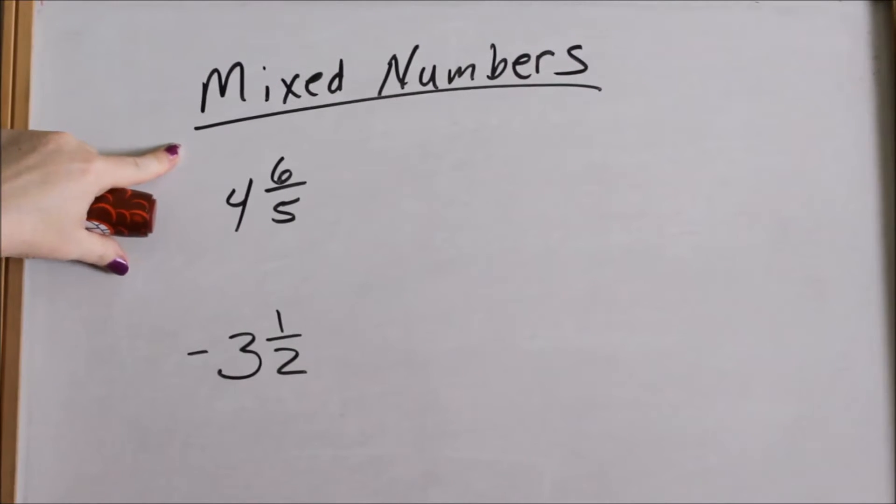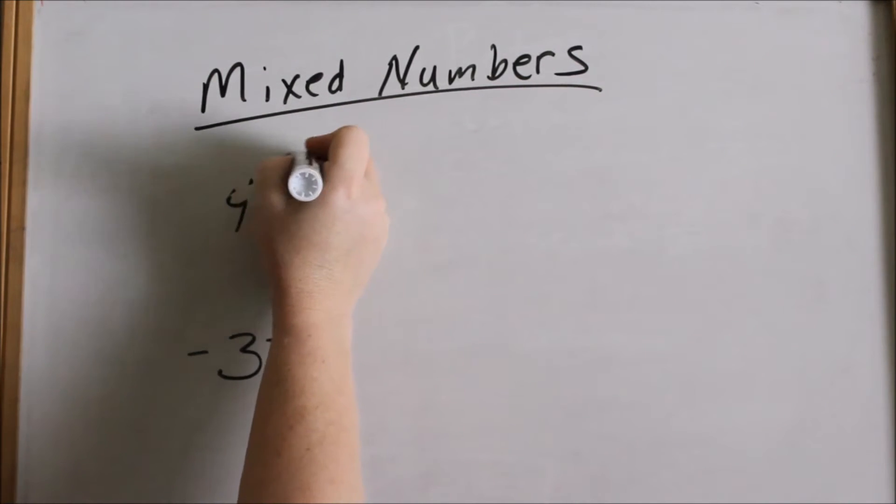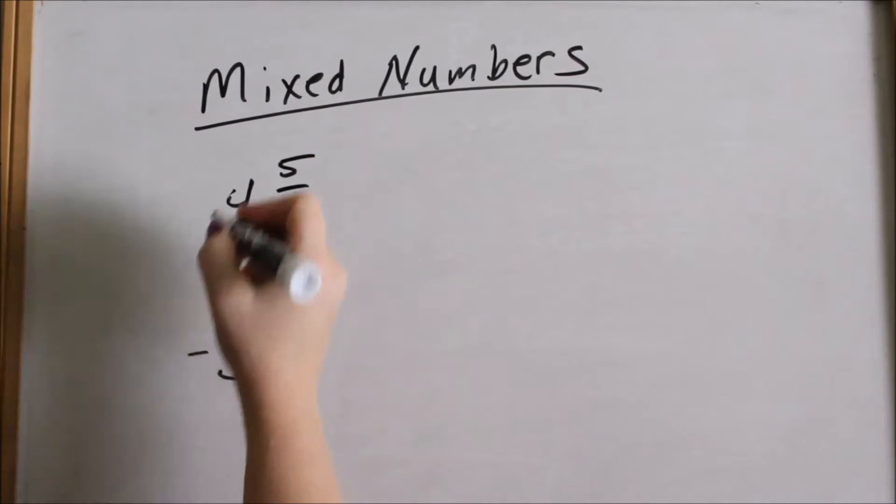Okay, this is just a review of mixed numbers. This is a mixed number. It's called a mixed number because it has a whole number and a fraction, four and six-fifths. Actually, let's make this four and five-sixths.